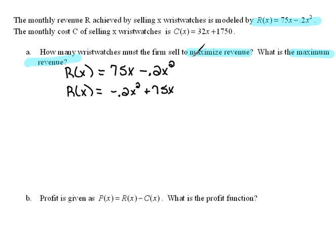Now, when they ask me to maximize the revenue, all we're doing is finding the maximum, or the vertex, for this quadratic function. So remember that we know that X equals negative B over 2A.